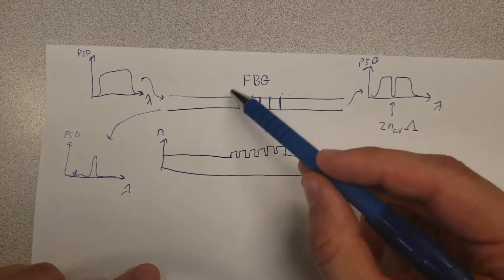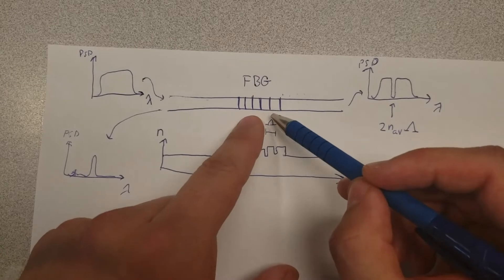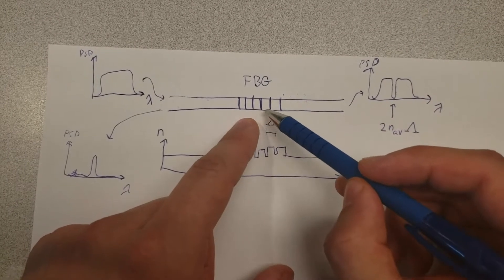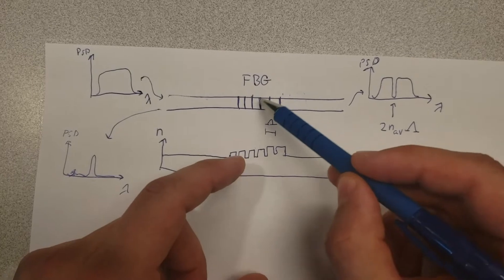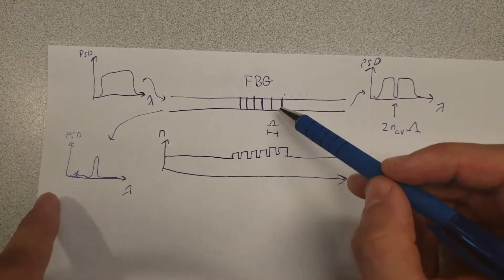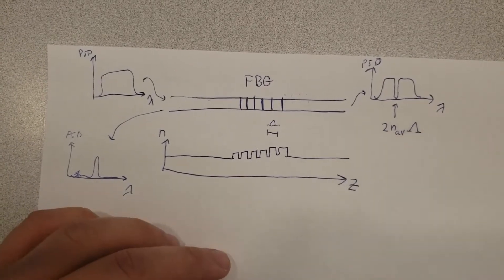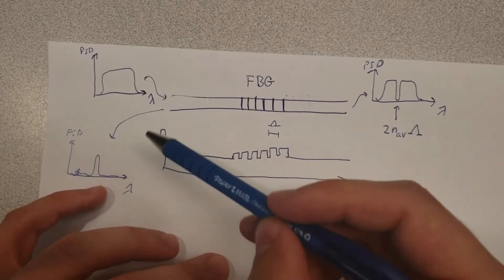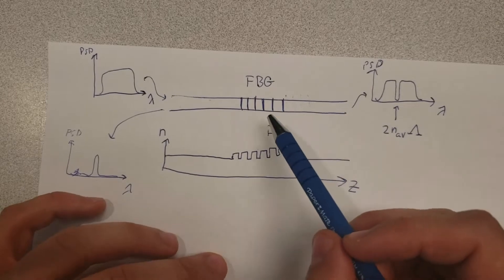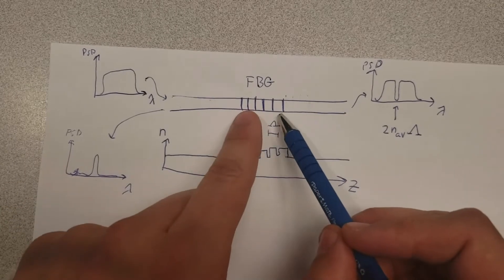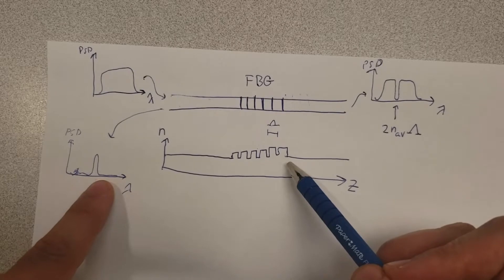Alternatively, you could increase the temperature of the grating, which causes thermal expansion. More importantly, there is also a change in the effective refractive index due to the temperature change, and that also shifts the filtered wavelength. This means the FBG can be used as a fiber optic sensor — for example, as a thermometer — because a certain temperature change causes a certain shift in wavelength.